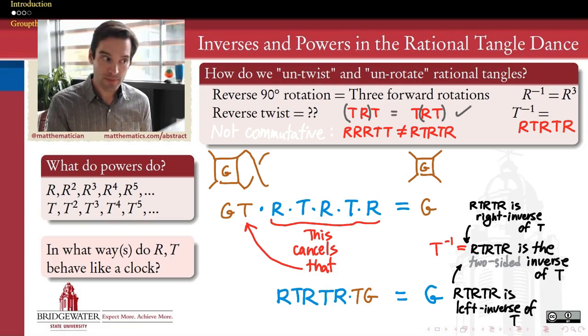What doesn't matter is the order in which we evaluate the operations on a successive product of three or more elements. So if I have TRT, for example, it doesn't matter if I dance out TR and then I add a twist to that,